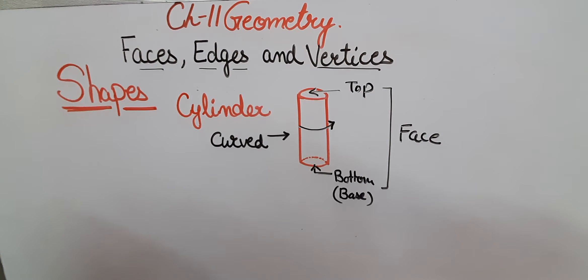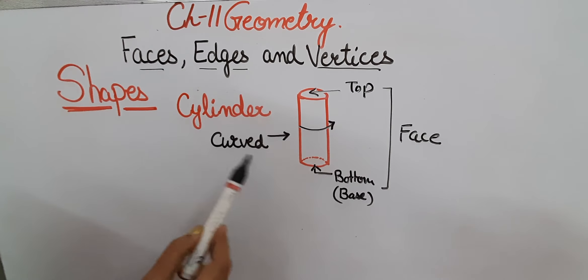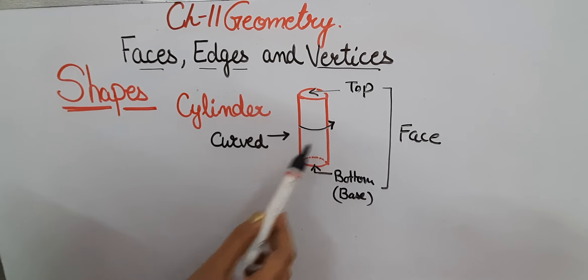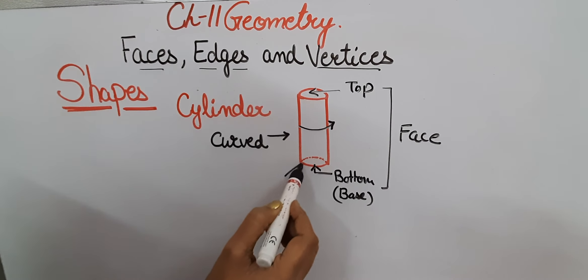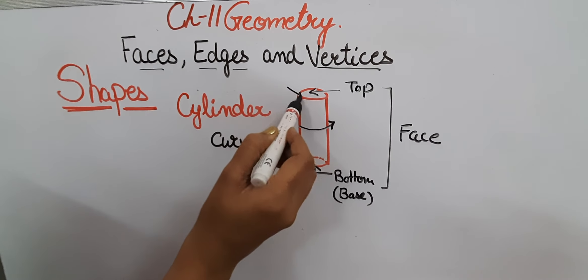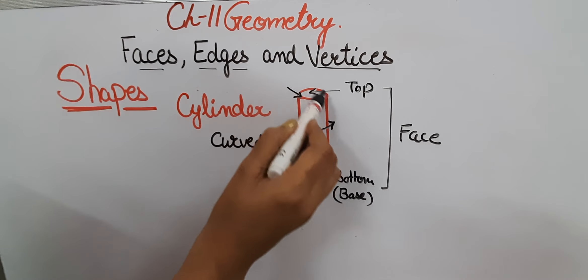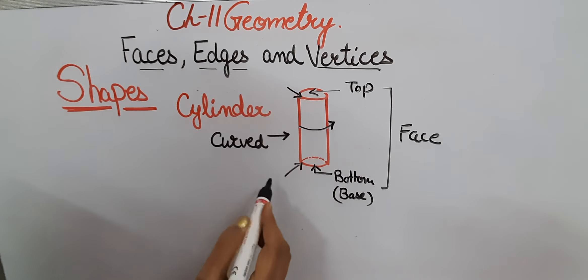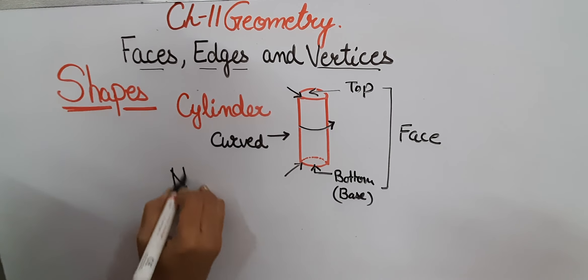So a cylinder has two plane faces on the top and the base, and one curved surface. It has two curved edges, because the flat surfaces meet the curved surface at two curving lines. These edges are curved, occurring where the curved face meets each plane surface. A cylinder has no vertex.